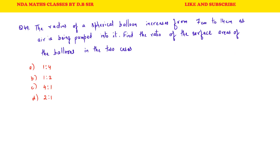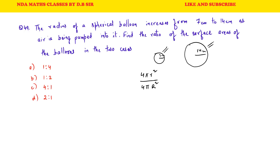Question 49: The radius of a balloon increases from 7 cm to 14 cm as air is pumped into it. Find the ratio of the surface areas in the two cases. Surface area of a sphere = 4πr². Ratio = 4π × 7² upon 4π × 14² — the 4π cancels. So ratio = 7²/14² = (7/14)² = (1/2)² = 1/4. So the ratio is 1 : 4. This is the correct answer.